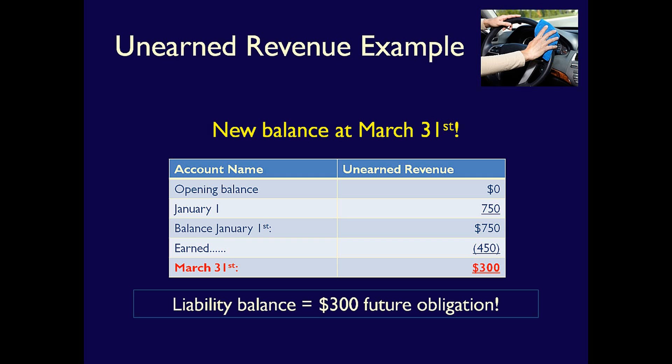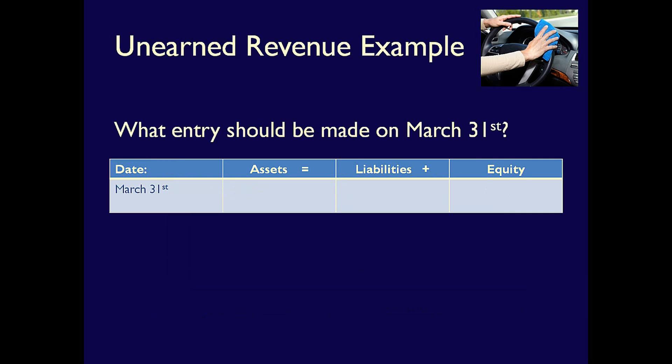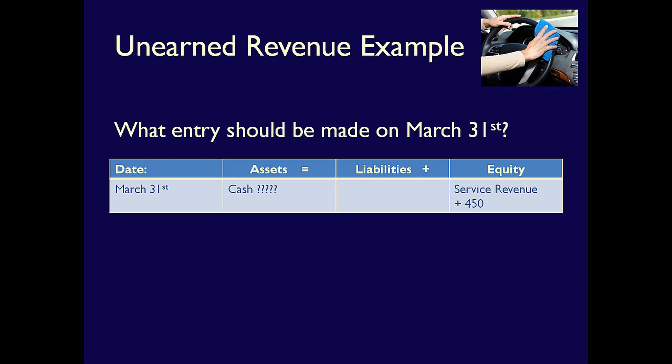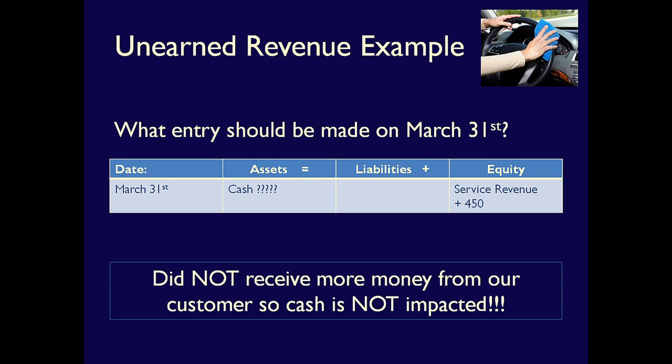We still have two months of obligation remaining, which is why $300 of liability remains in the unearned revenue account at March 31st. In order to reflect that we've provided three months of cleaning services, we need to record a service revenue of $450. Students often then use cash as the other side of the entry — but is that correct? We've not received any more money from our customer, so cash is not impacted and you should leave it alone.